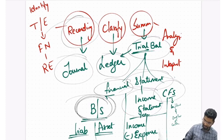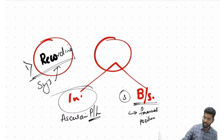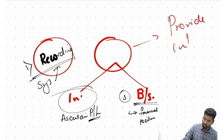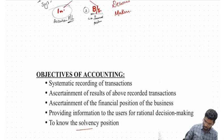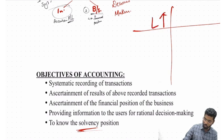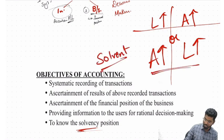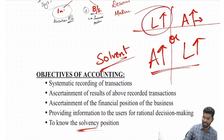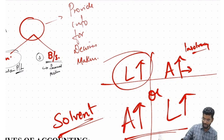The fourth objective is to provide information for decision makers. The fifth objective is to know the solvency position — meaning to know whether my liabilities are more than assets or assets are more than liabilities. If assets are more than liabilities, you are in a good financial position. If liabilities are more than assets, you are in a position of insolvency.